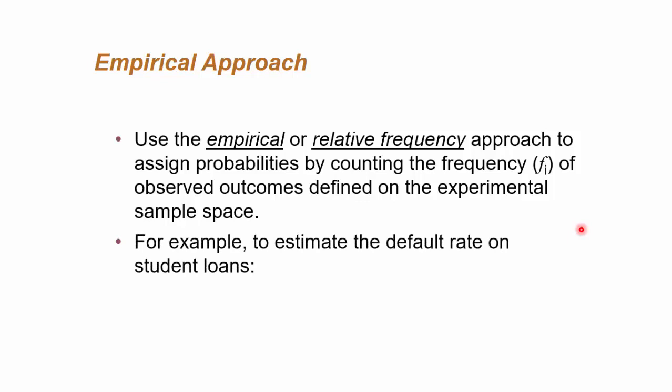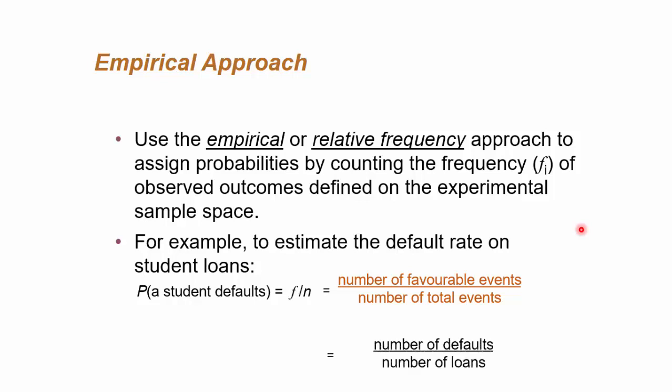So estimating the amount of default rates on student loans—you do not know the sample space, and you may not be able to estimate unless you collect data. So what's the probability that a student defaults? The number of defaulters over the total number of students who have taken a loan. So that's favorable events over total events: number of defaults over number of loans.